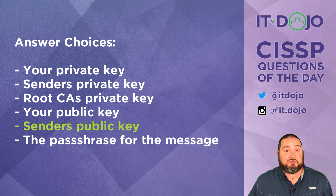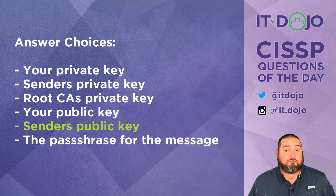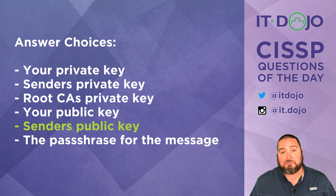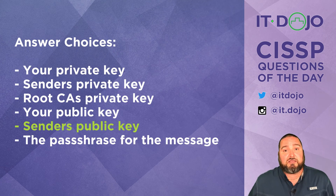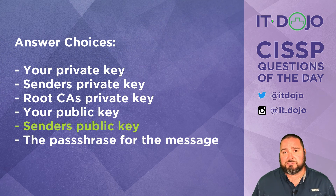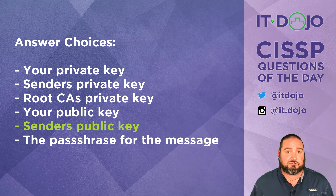In so much as you trust the signer and trust their certificate, you've got origin authentication because you know it's from who you believe it to be from. You've got data integrity because the hashes match. And you've got non-repudiation because the person who signed it is the only person who has the private key, so they can't deny that they're the ones who sent the email. Lots of cool stuff with hashing and asymmetric cryptography when you have a trusted authority behind it in the form of a public key infrastructure.